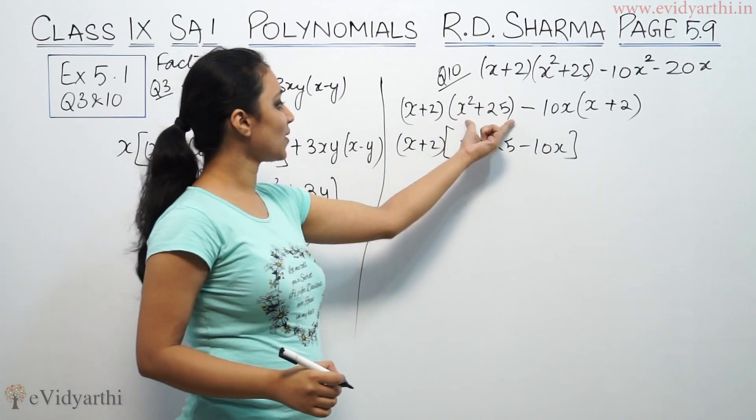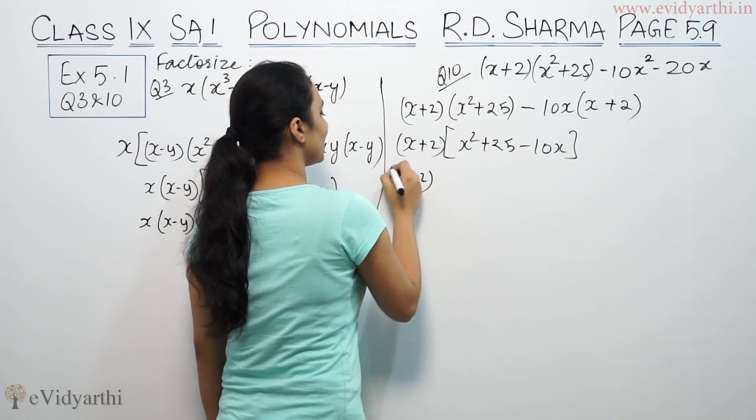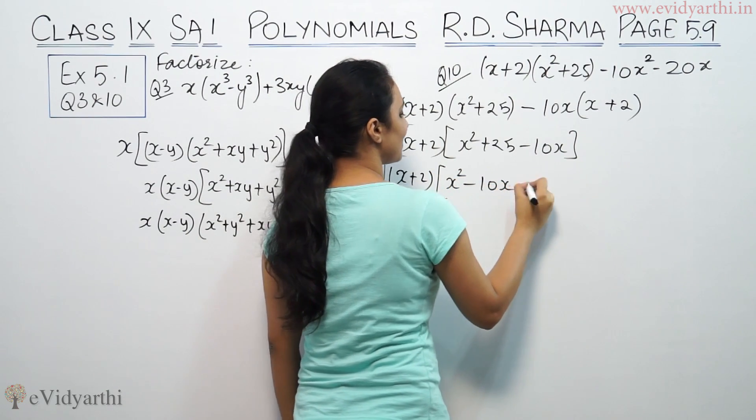So we have x² + 25, then negative sign, then -10x. Taking (x + 2) in front and behind, we get x² - 10x + 25.